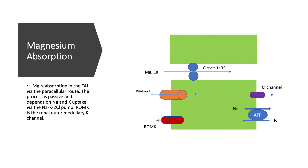Magnesium absorption in the thick ascending limb is via the paracellular route — between the cells — and it is passive. It depends on other factors: the sodium-potassium-2-chloride exchanger, the ROM-K channel (potassium goes out), and the chloride channel (chloride goes out). The sodium-potassium ATPase pumps sodium out and potassium in. Magnesium and calcium escape paracellularly through two tight junction proteins, claudin-16 and claudin-19.